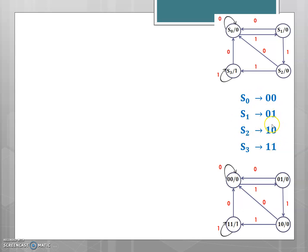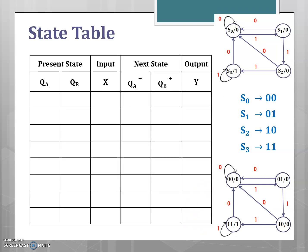Once the binary state assignment is done, the state diagram is redrawn with the corresponding binary values. The next step is to derive the state table, which represents the behavior of the circuit in tabular form. The state table consists of the present state, next state, and the output for each input. The input can be either logic 0 or logic 1. Since there are two bits, the present state is represented as QA and QB, the next state as QA+ and QB+, and the output as Y.